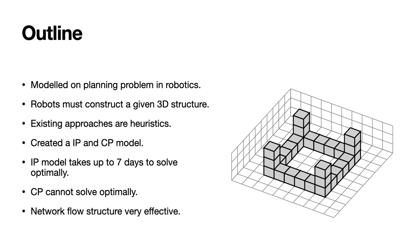Our IP model takes up to 7 days to solve optimally some of these very simple instances that appeared in the state of the art reinforcement learning paper. We tried it on 6 instances and the IP model took up to 7 days to solve. The CP model wasn't able to solve these instances optimally even though they were very tiny. In our conclusions we found that the IP model was better than the CP model because the IP technology was able to exploit these network flow structures much more effectively, and the CP model probably didn't perform as well because it had a lot of weak propagation coming from disjunction and implication constraints.